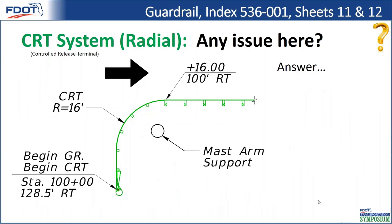For CRT systems — Control Release Terminals — which is our radial system currently shown in our standard plans, this is typically installed when the principal roadway direction runs left to right and you're trying to shield a hazard or drop-off while rounding a corner where there's a side street or driveway. One thing that looks good is they called out begin guardrail and begin CRT at the same post, with the begin guardrail at post one. They called out the start of the radius and the radius itself, which is helpful for contractors.